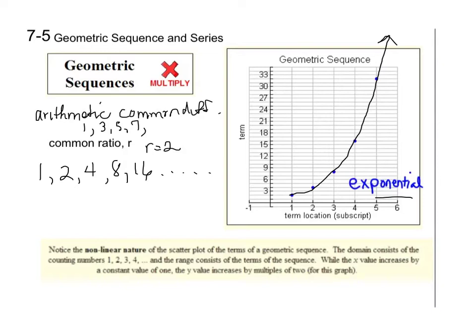A common ratio could also be a fraction. A fraction is just division and we know that division is really just multiplying by a fraction. So if I start with 1, this would be 1/2, then 1/4, then 1/8, and it is still exponential. In fact, geometric sequences are exponential.